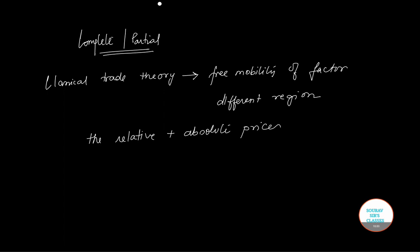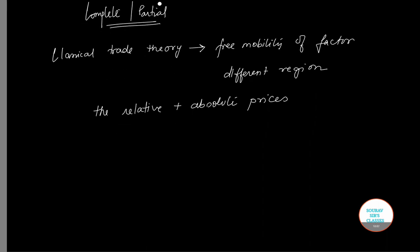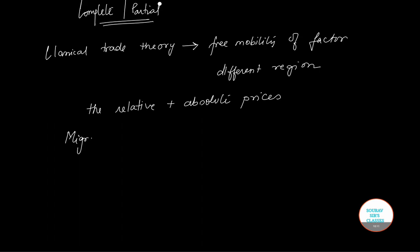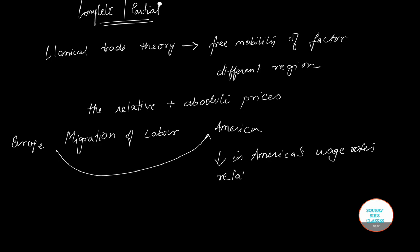An example has been posted: migration of labor from the crowded Europe to the less crowded America would result in a drop in American wages relative to America's land rents and relative to commodities.